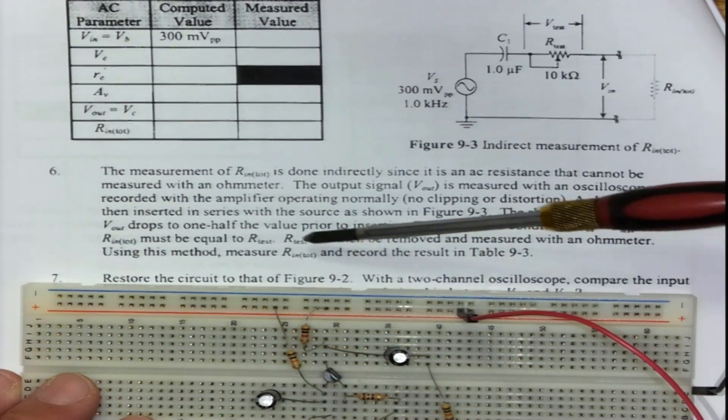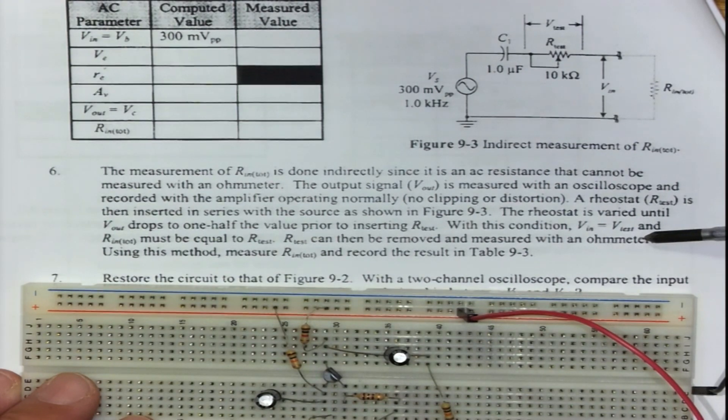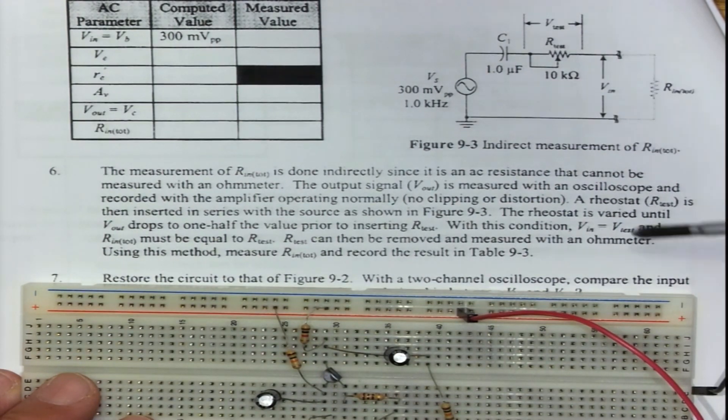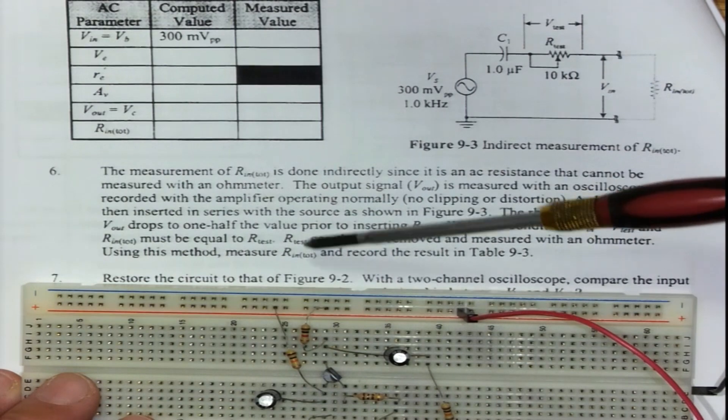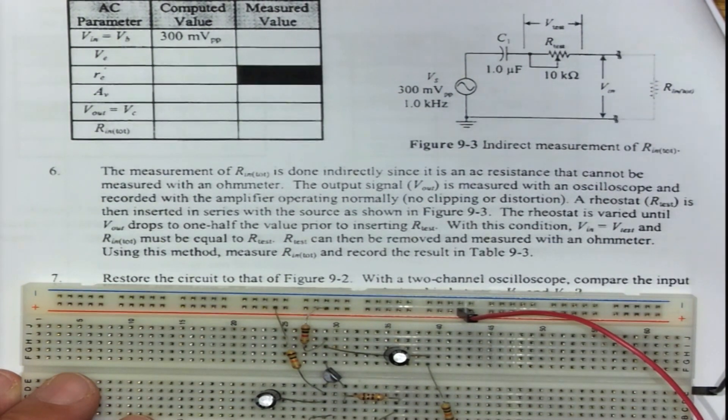All that we then do is remove the test resistor and measure it using a normal ohmmeter. With that method you can measure the Rin total and write it into the table.